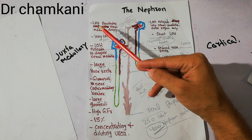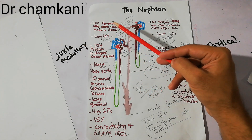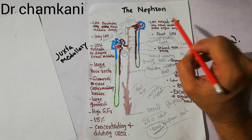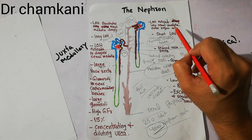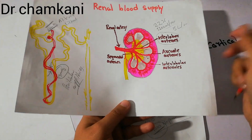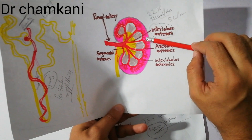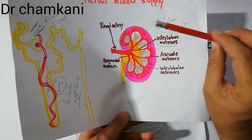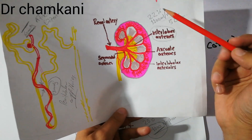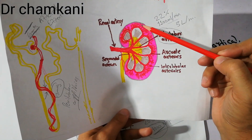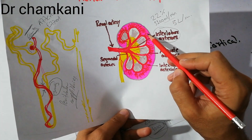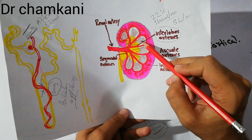The juxtamedullary nephrons are the nephrons with a loop of Henle that penetrates the renal medulla deeply, and cortical nephrons are the nephrons with a loop of Henle extending into the renal medulla outer region only. The outer part of the kidney is the cortex while the inner part is the medulla, so the juxtamedullary nephrons are those in which the loop of Henle penetrates deep in the medulla, while the cortical nephrons have a loop of Henle penetrating the medulla but not that much deeply.